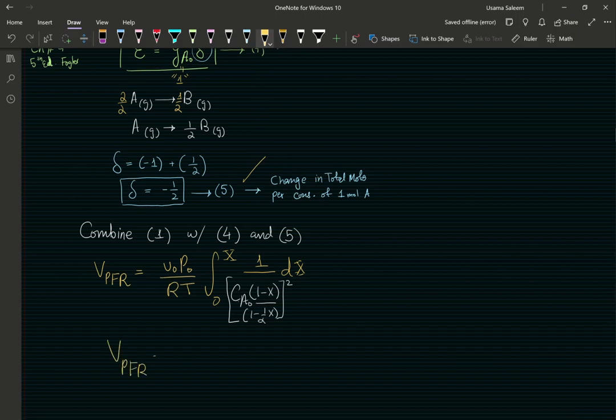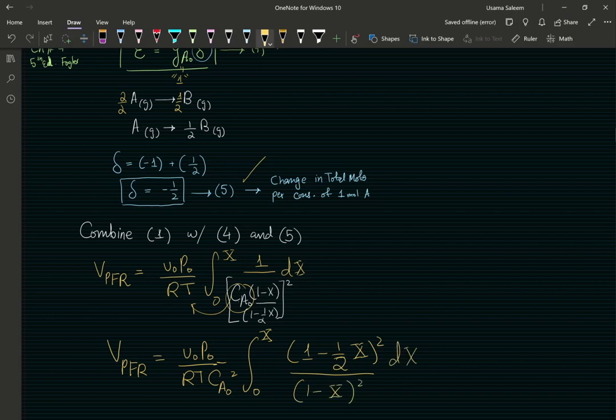Volume of PFR is going to be V naught, V naught, P naught, K, R, T. Now, you're going to be able to pull this out. CA naught squared. Don't forget the squared. Integrated from 0 to X. Now, you get 1 minus 1 over 2 times the conversion squared over 1 minus X. Also squared. So, this right here is the integral. We have developed our equation. This right here is our final equation.